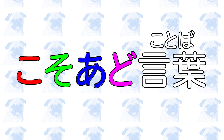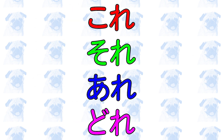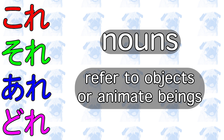Although there are many different kinds of koso-ado phrases in Japanese, in this episode I'm going to use one set — kore, sore, are, dore — as an illustrative example. The rest of the koso-ado phrases will be featured in another episode, so stay tuned. Kore, sore, are, dore: these four words are nouns that can refer to objects or animate beings.